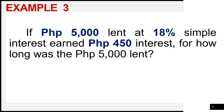Now we are on to our last example. If P5,000 is lent at 18% simple interest and earned P450 interest, for how long was the P5,000 lent? We are looking for the value of the term. P5,000 is our principal amount, 18% is our rate, and to convert 18% to decimal form, we divide by 100 or move the decimal point two places to the left, giving us 0.18.